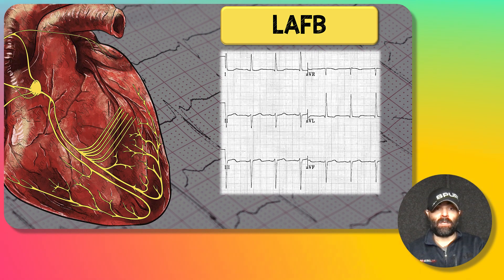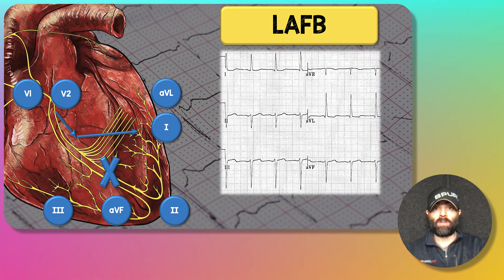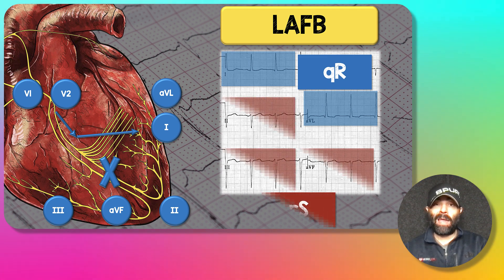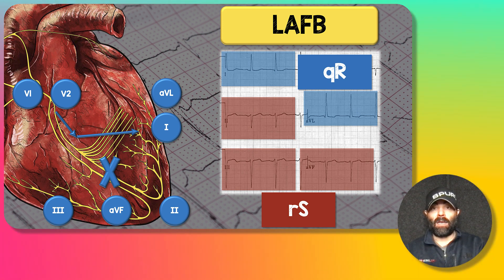With left anterior fascicular block, the anterior fascicle is blocked, so depolarization predominantly travels back up via the left posterior fascicle. This means depolarization moves toward the high lateral leads and away from the inferior leads, giving a big R-wave in leads 1 and AVL and a predominant S-wave in the inferior leads. You also get left axis deviation — an upward-going QRS in lead 1 and a downward-going QRS in AVF, meaning the heart is shifted to the left.